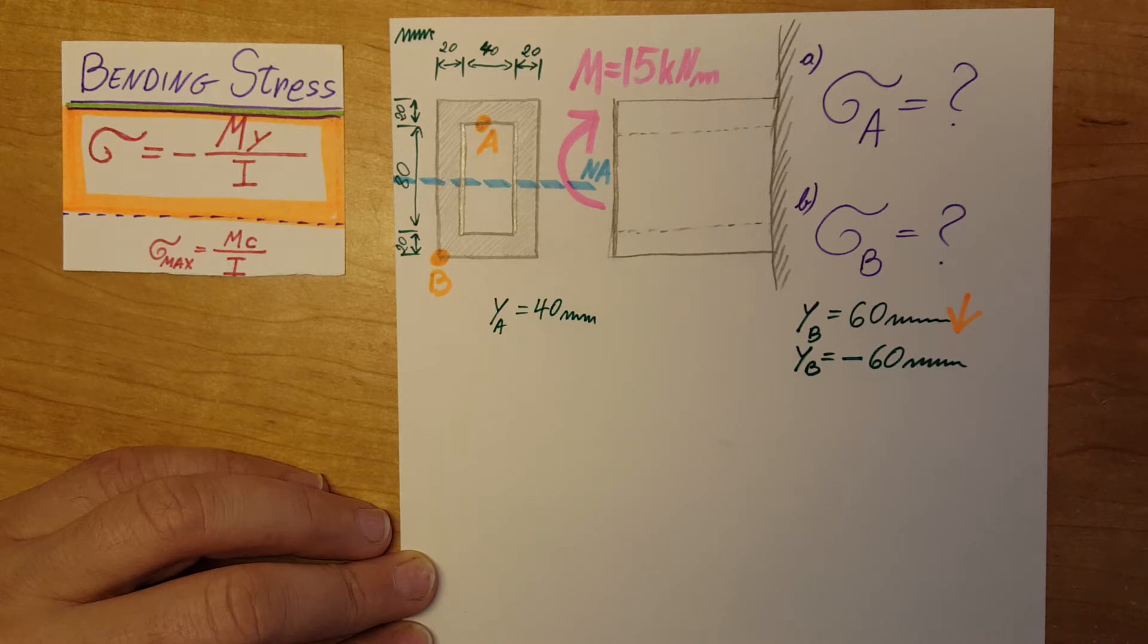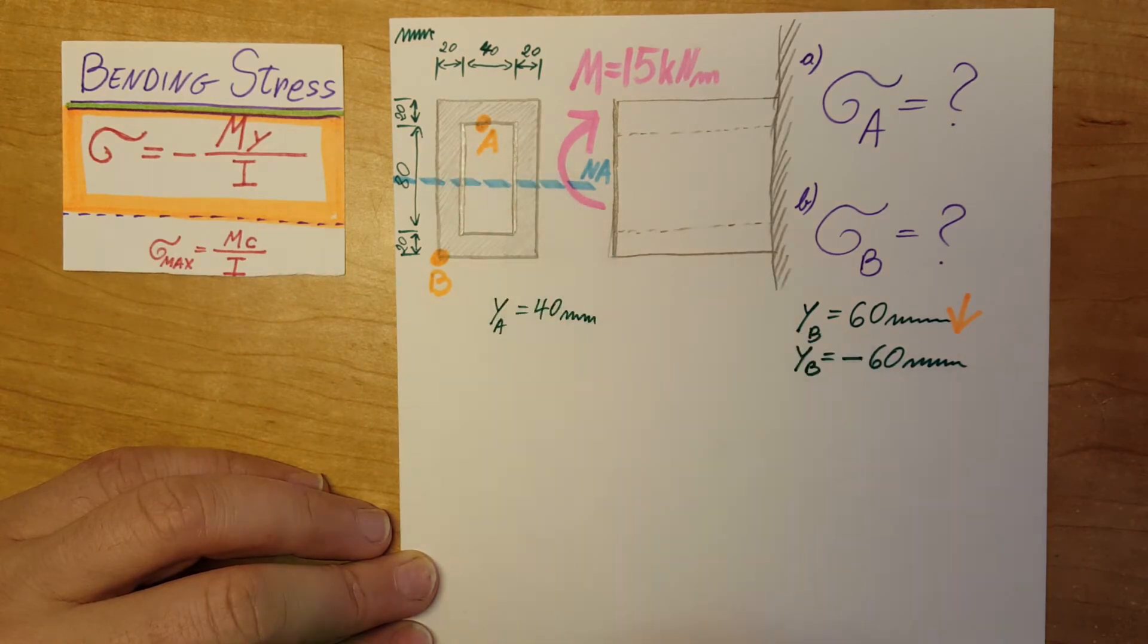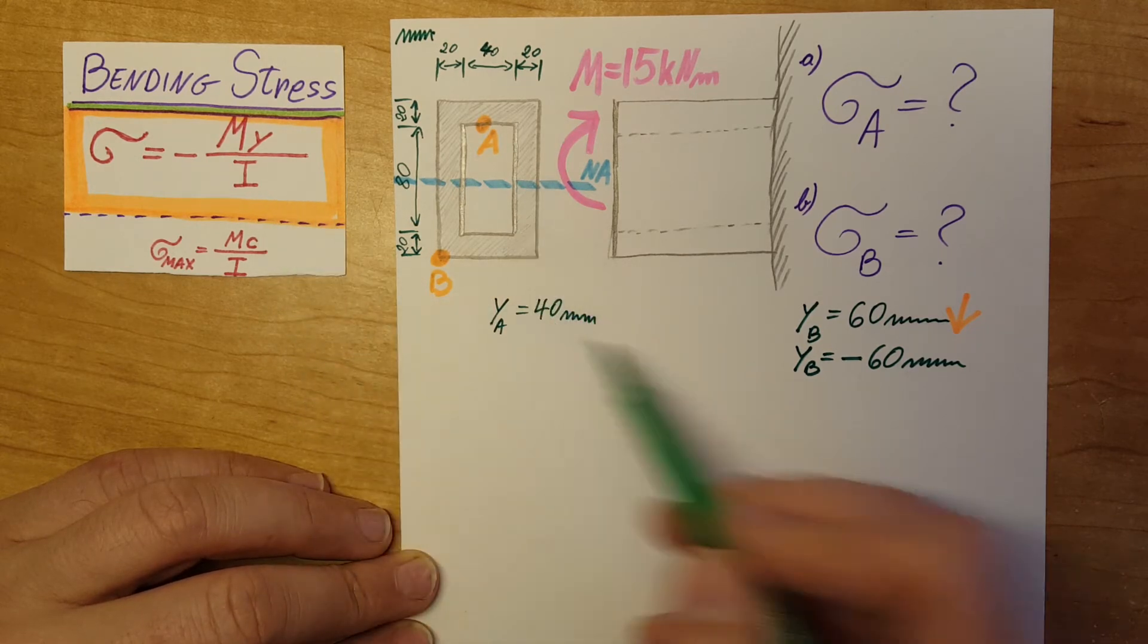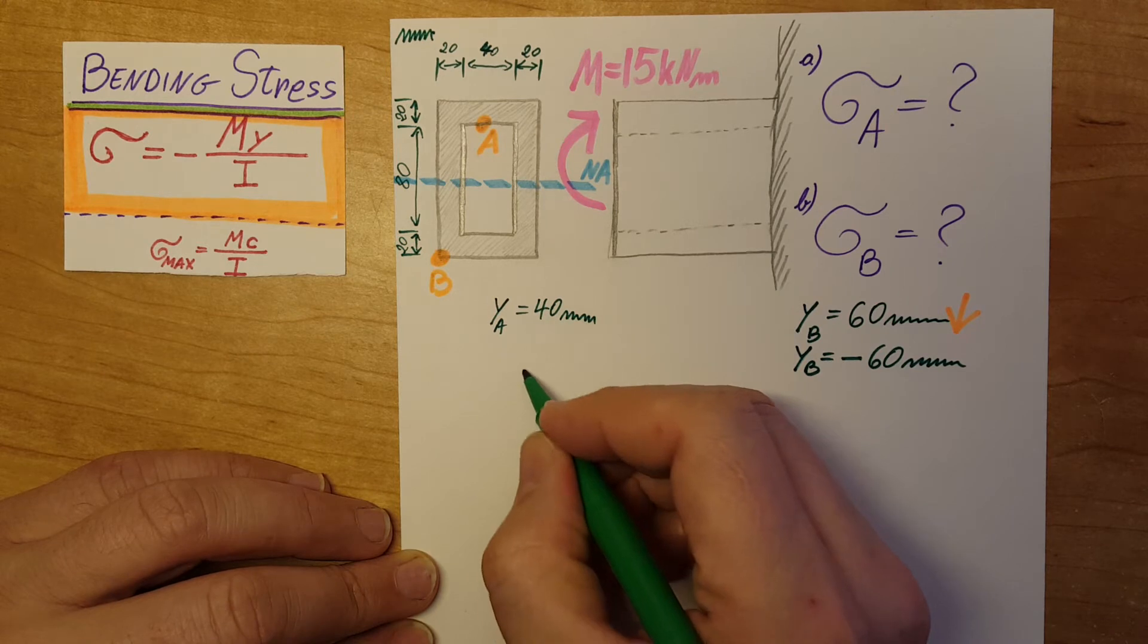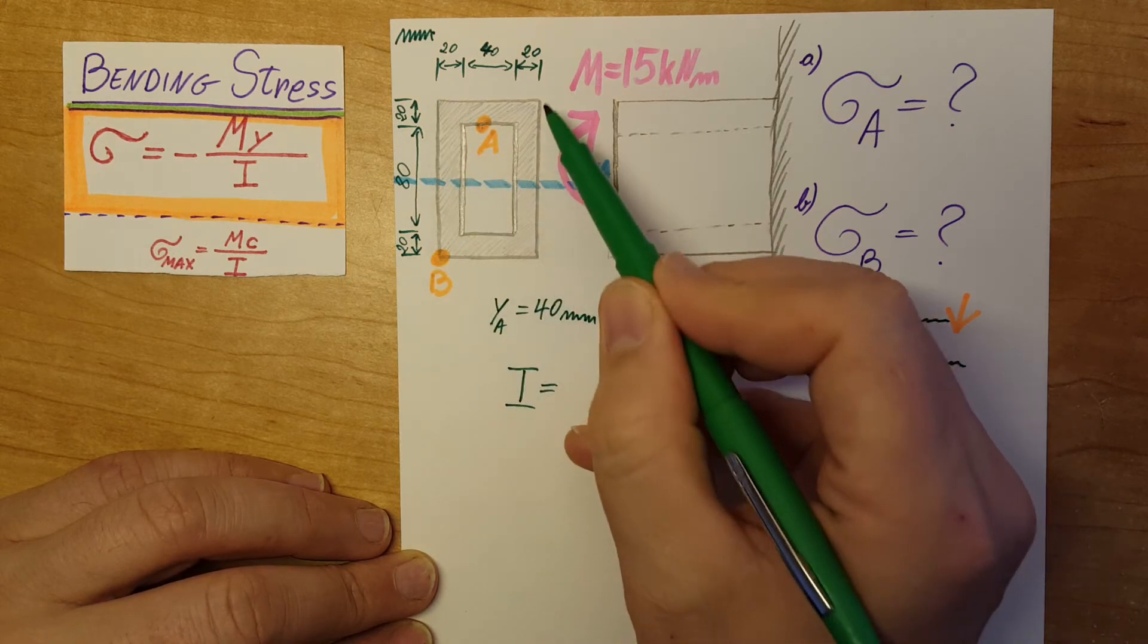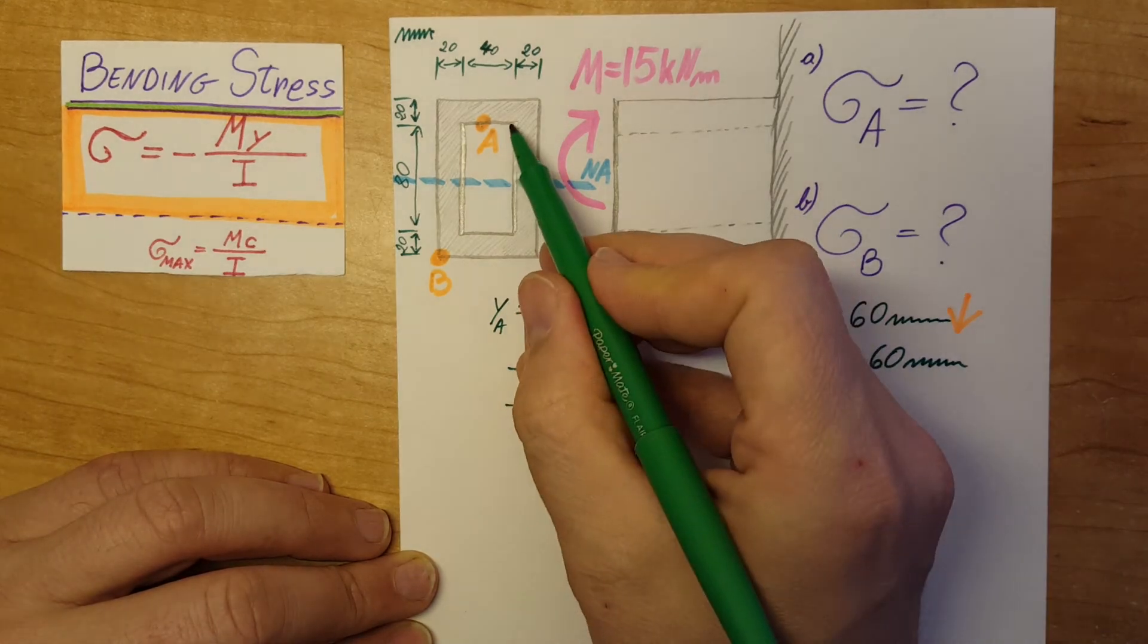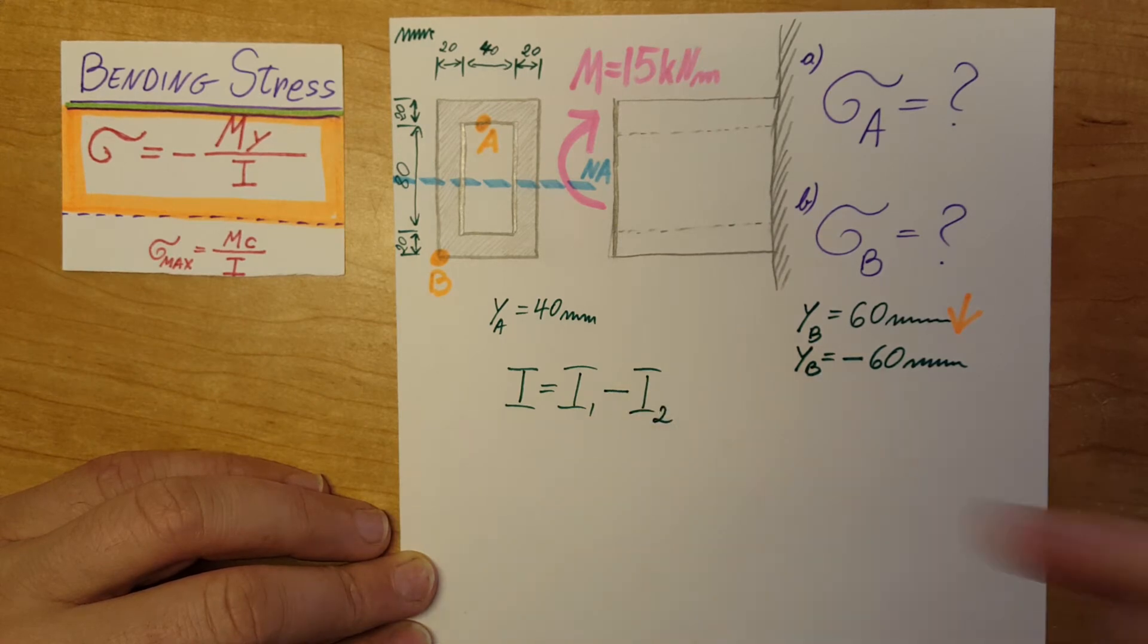Now let's take a look at the moment of inertia of this material, of this rectangle with a hollow interior. It doesn't matter what point we're talking about, the moment of inertia will be the same for both point A and point B. So the total moment of inertia will be equal to, I'm going to take the outside rectangle, so I'm going to call it I1, and then the interior rectangle I'm going to subtract it, so minus I2.